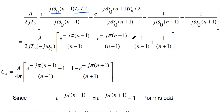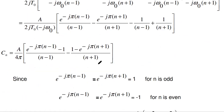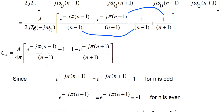In these terms, ω₀ and T₀ appear in multiplication. Since ω₀ = 2π/T₀, the product ω₀ · T₀/2 = (2π/T₀) · (T₀/2) = π — the T₀ cancels and the 2 cancels. So the product ω₀ · T₀/2 equals π. Therefore e^(−jω₀(n−1)T₀/2) becomes e^(−jπ(n−1)) and similarly e^(−jω₀(n+1)T₀/2) becomes e^(−jπ(n+1)).